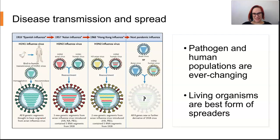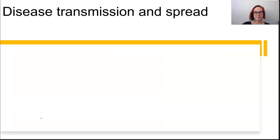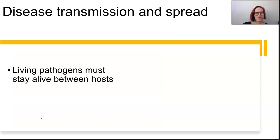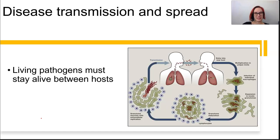Living organisms are the best types of spreaders — we're essentially vectors for one another. We love to travel, and this leads to increased transmission. For transmission, living pathogens must be able to stay alive between hosts, and they must be able to infect a new organism to reproduce and live.